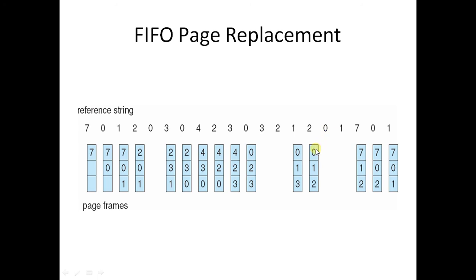Now we have 0 — 0 is already present, so it will be a hit. 1 is already present, so it will again be a hit. Now 7 is not present, so 7 is moved to the first FIFO position. 0 is not present, so 0 is moved to the second position. Now 1 is not present, so 2 is removed out and 1 is entered. As you can see, there are a total of 15 misses and 5 hits.